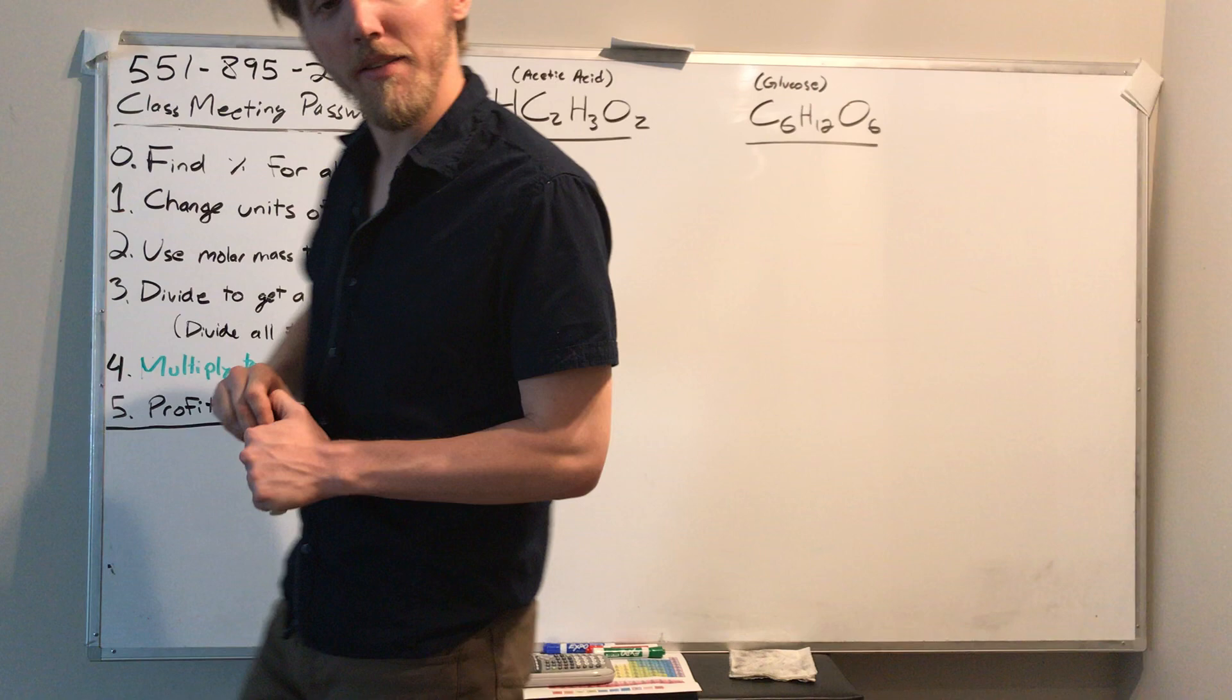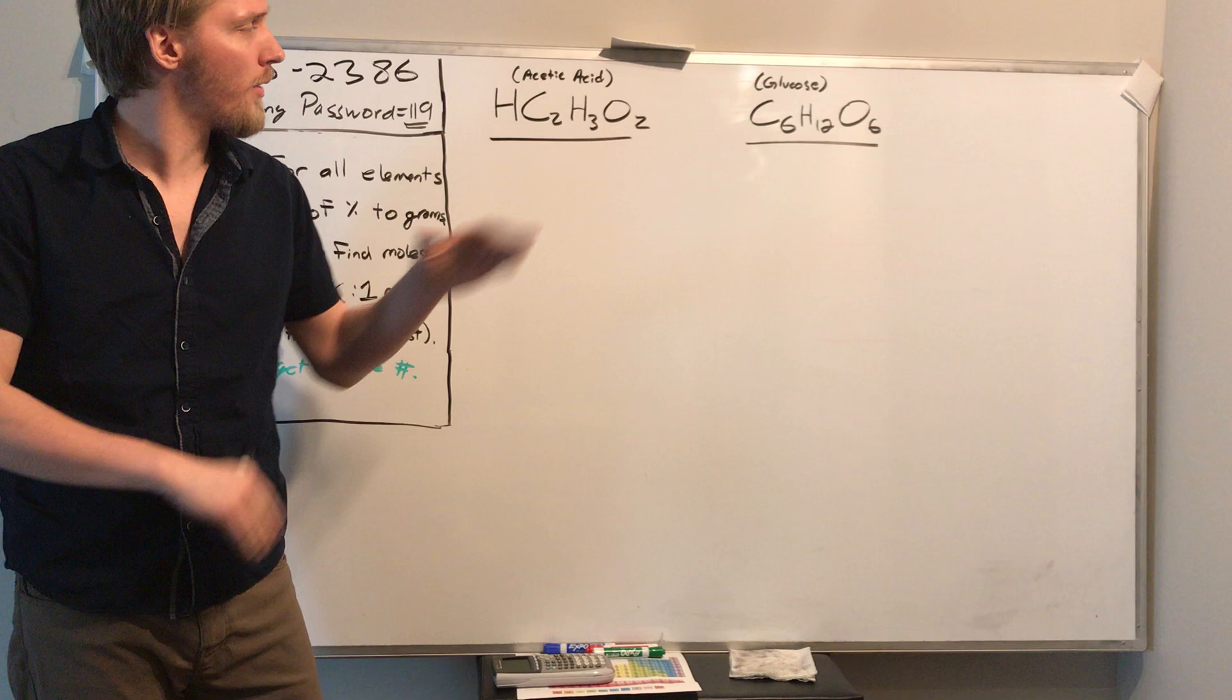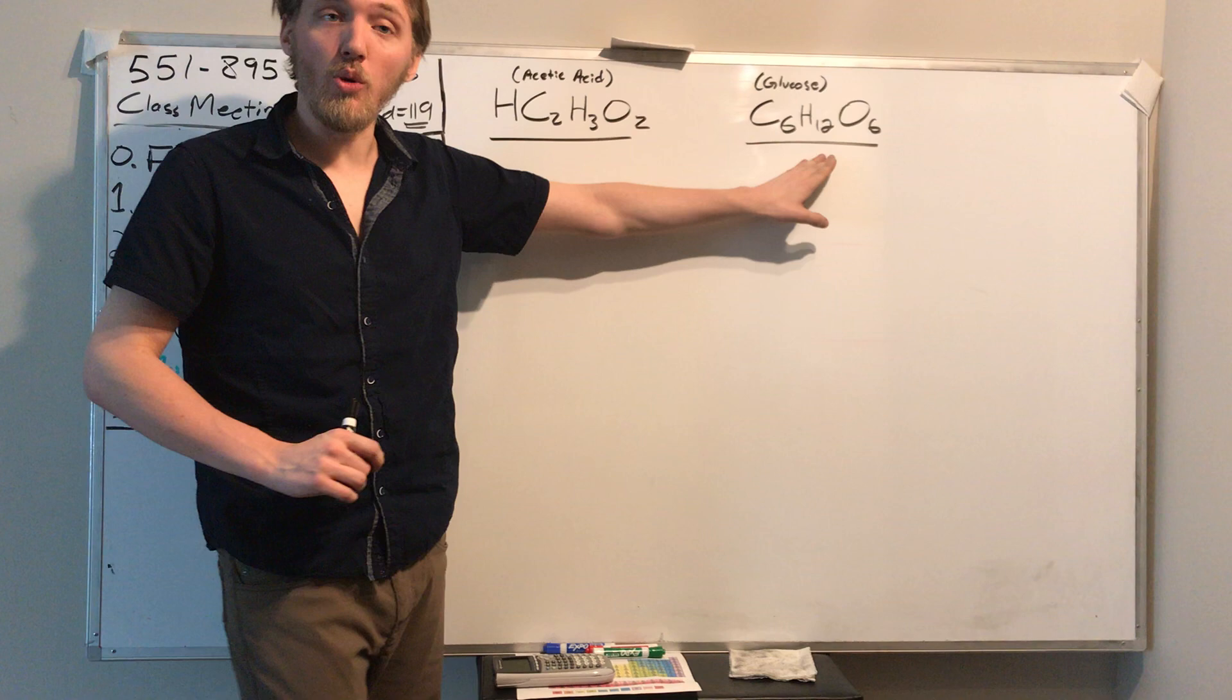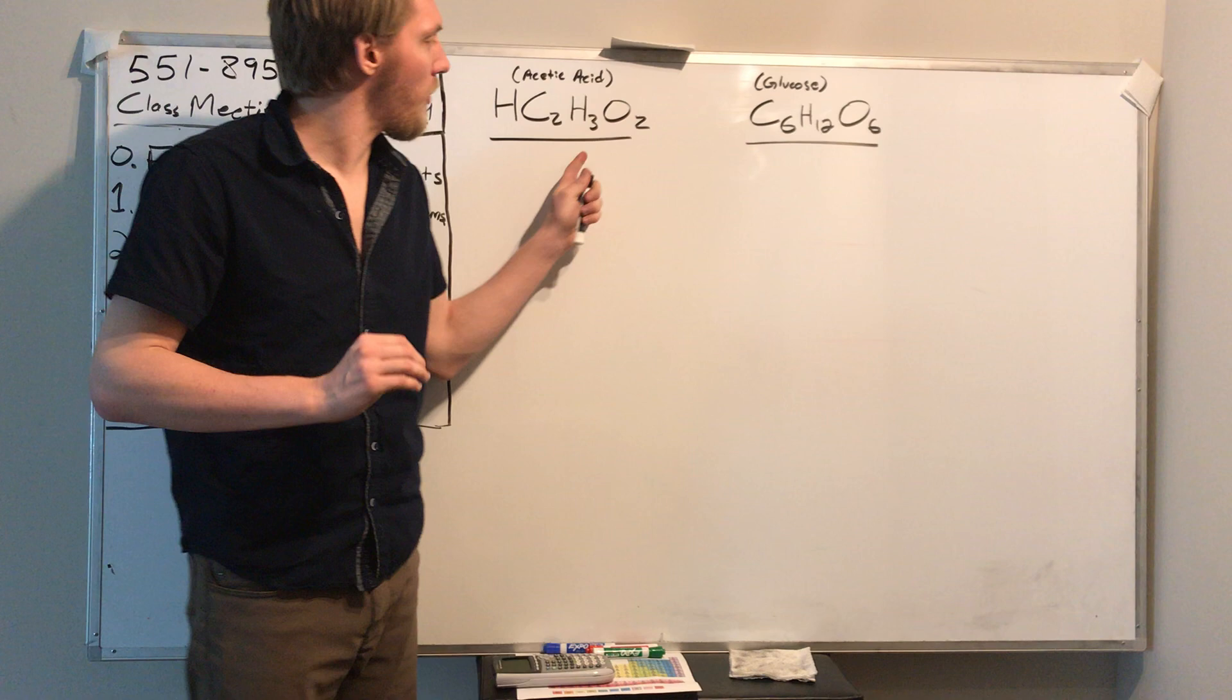Before I answer the question that is the title of this video, I want you to do this. Find the percent composition of these two compounds. This one's acetic acid, the acetate ion with hydrogen in front. This one is glucose, C6H12O6, it's sugar. Find the percent composition.